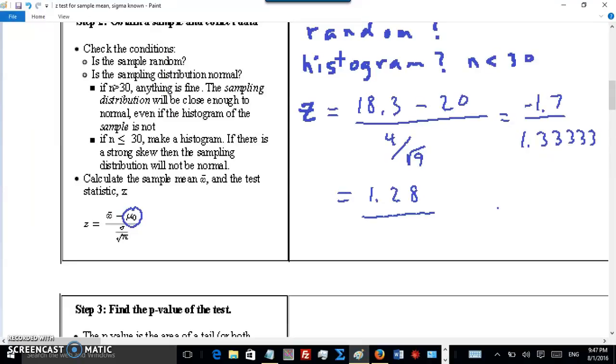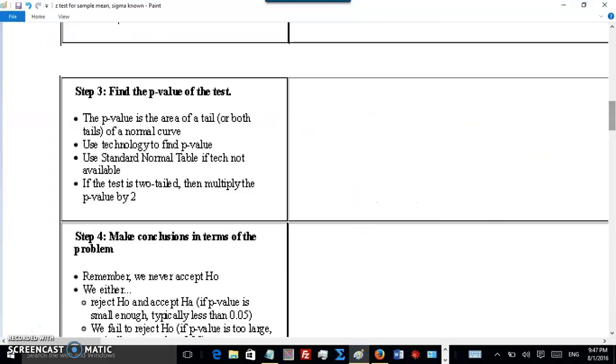Not a terribly high Z score. So it's looking like we will not have enough evidence here. You need a high Z score, usually upper 1s, 2 point something, 3 point something, to have evidence of something. But let's get the p-value now. On to step 3. Z is 1.28. You can use the calculator, use a website or the table. I'll just use the table here. Let's draw a quick picture here first.